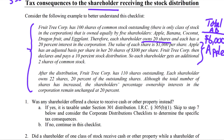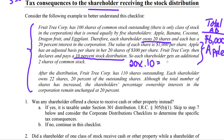Fruit Tree declares and pays a 10% stock distribution — also called a stock dividend; those terms are synonymous in the tax world. I prefer 'stock distribution' to keep the checklist clear for students. So each shareholder gets an additional two shares: 20 shares times 10% equals two new shares per shareholder.